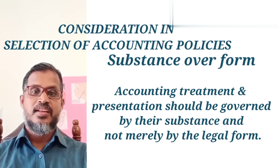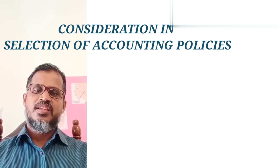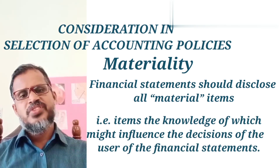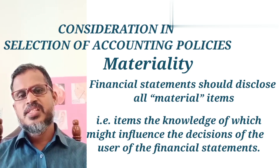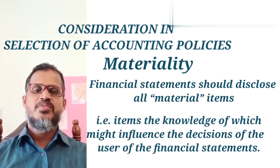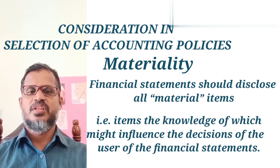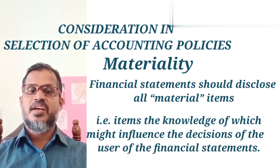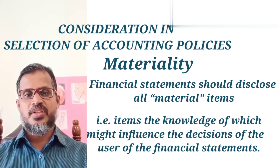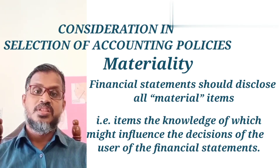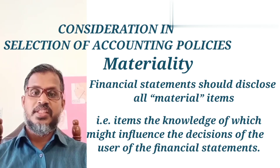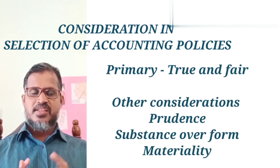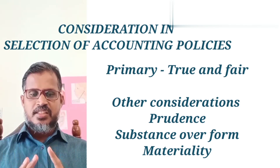Accounting policies are selected based on economic reality, not the legal form. The third consideration is Materiality: a material item is one whose knowledge influences the economic decision of the user of the financial statements. All material items must be disclosed. The primary consideration is true and fair view, and the three major considerations are prudence, substance over form, and materiality.